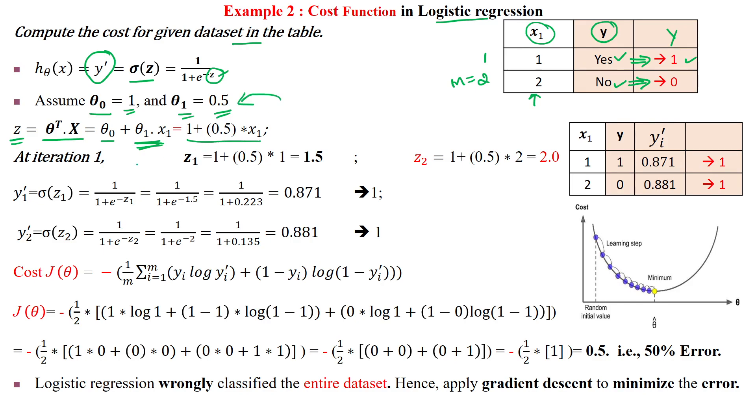Now we have the g function. In iteration 1, we calculate g₁ for sample 1, which gives 1.5, and g₂ for sample 2, which gives 2.0.